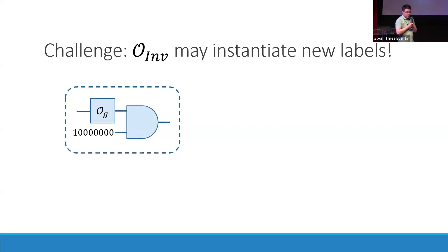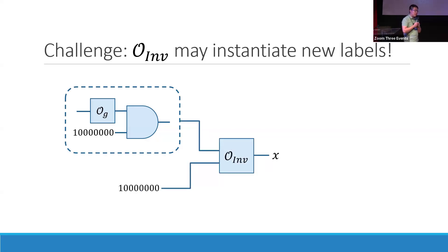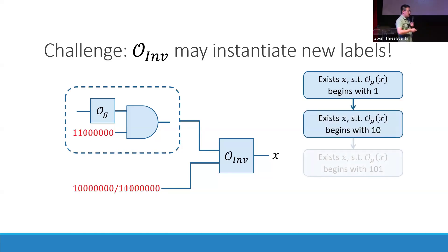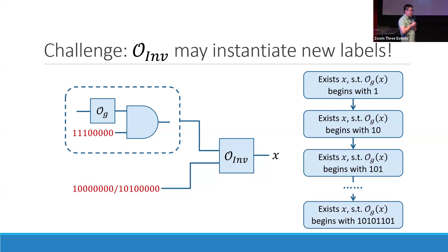A specific thing you can do: take the output of the multiplication oracle, bit-mask to extract the first bit, and try to invert it requiring the first bit to be 1. In other words, you must find a label for a group element such that if you pass it through a multiplication gate, the resulting label starts with 1. You can easily find an answer to this. Then you can extract the first two bits and require them to be 1-0 or 1-1, and at least one of these will succeed. You repeat the process until you extract a label like 1-0-1-0-1.